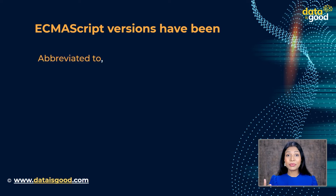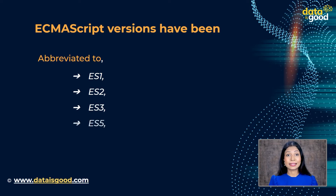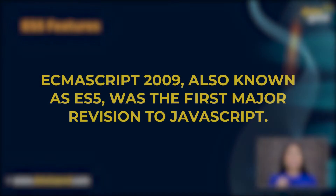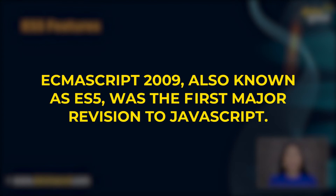ECMA could not be called JavaScript because JavaScript was a trademark held by Sun Microsystems, which later became Oracle. ECMAScript versions have been abbreviated to ES1, ES2, ES3, ES5, and ES6. ES5 and ES6 are the latest and most widely used because of their properties. We will explore some of the features that ES5 and ES6 have brought to the table. Let us start with ES5 — ECMAScript 2009, also known as ES5, was the first major revision to JavaScript.